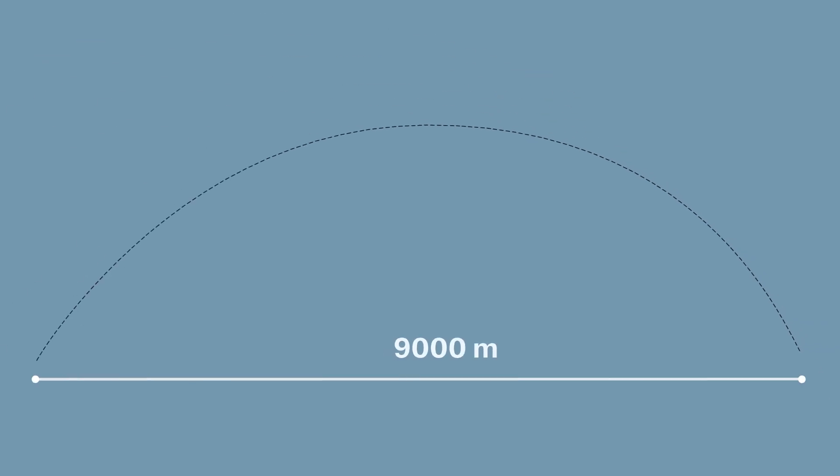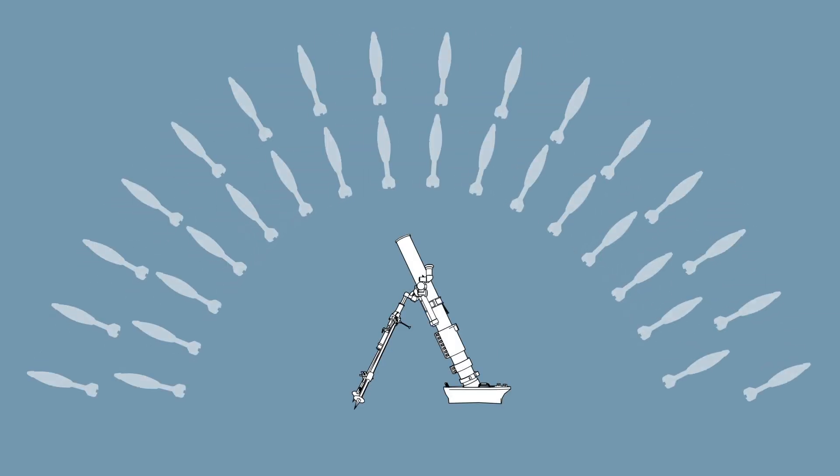Their range varies significantly with caliber and gun design, but can be as little as 50 meters to more than 9,000 meters, making them a short-range weapon compared to artillery guns. They can be used in large volleys of up to 30 rounds per minute.